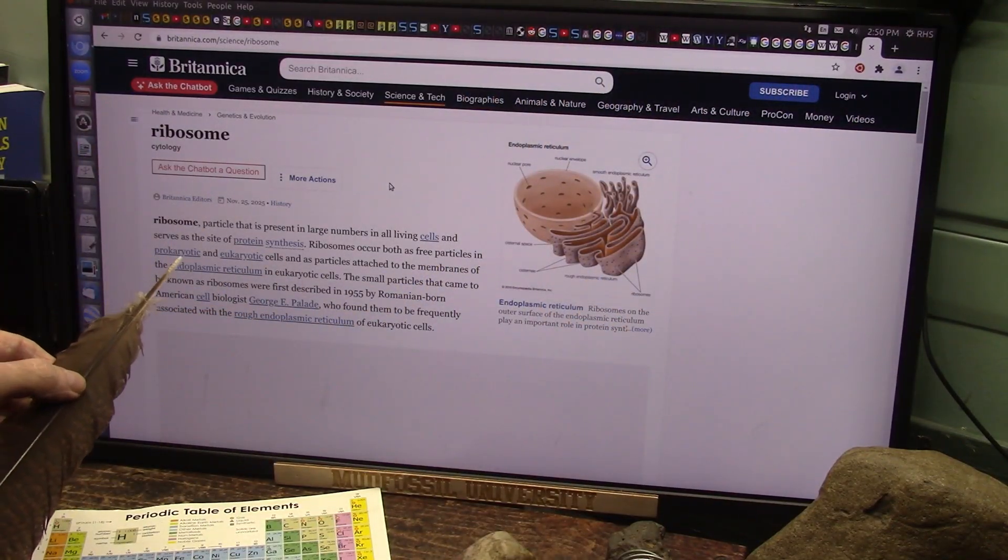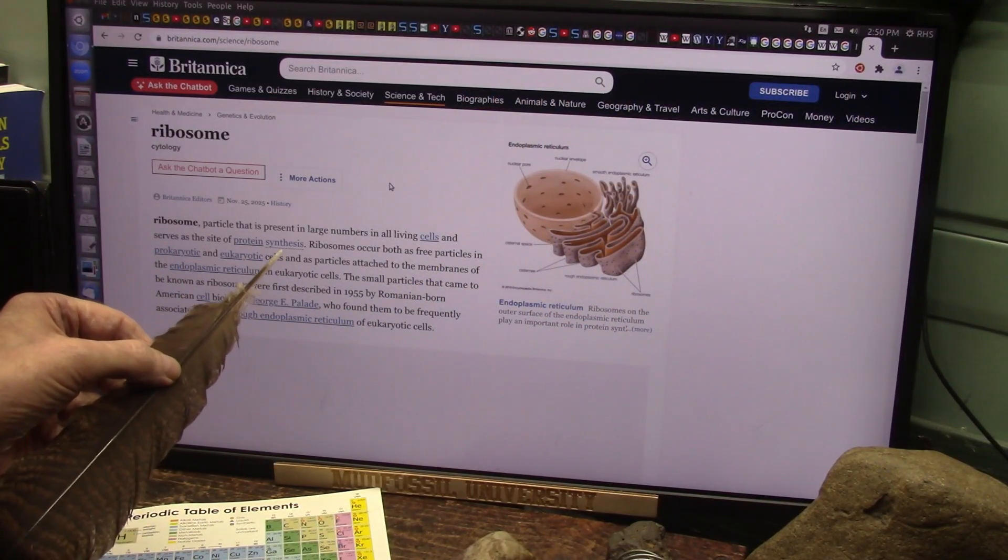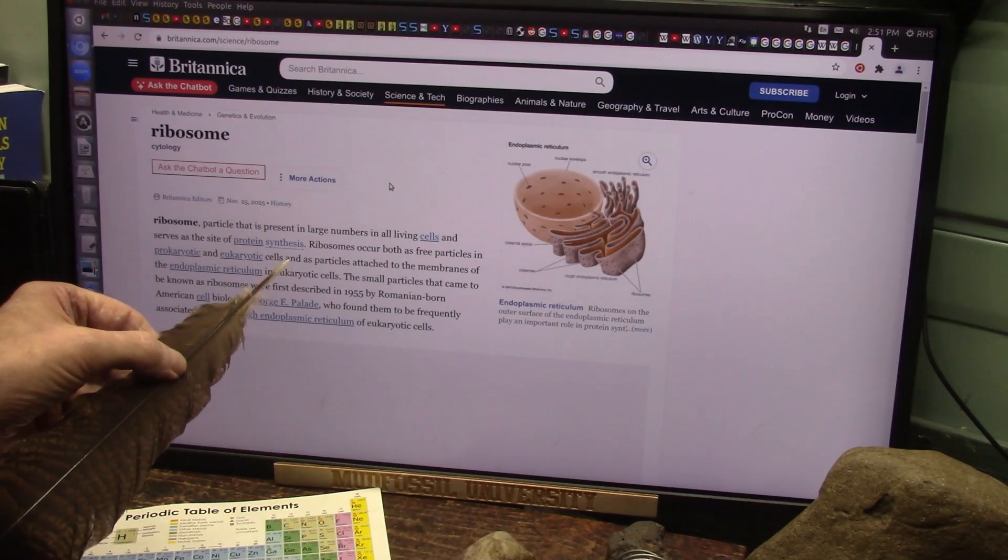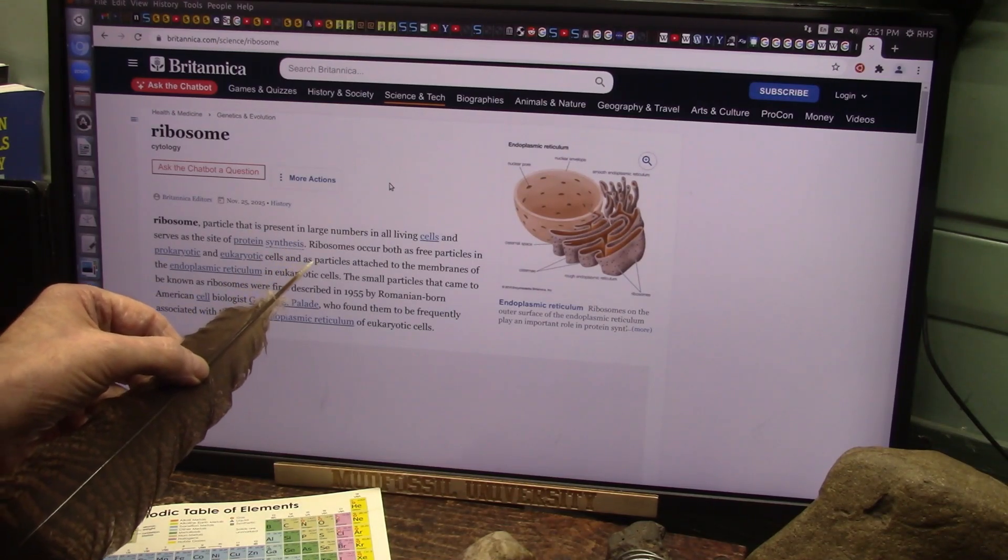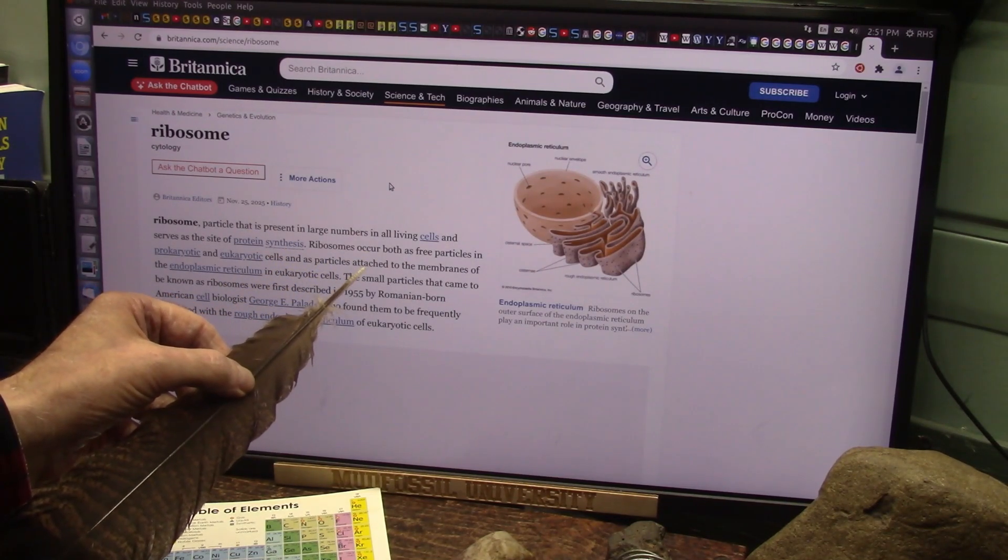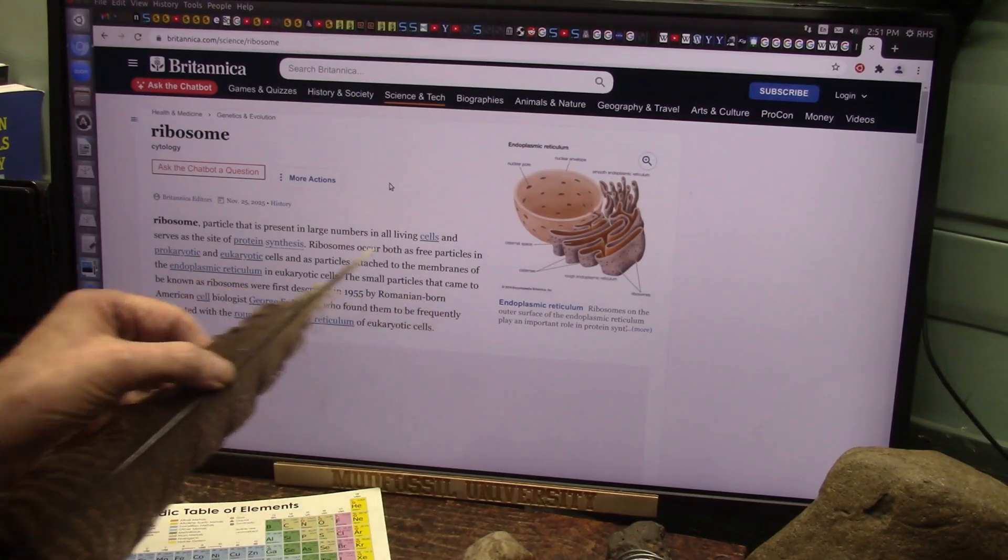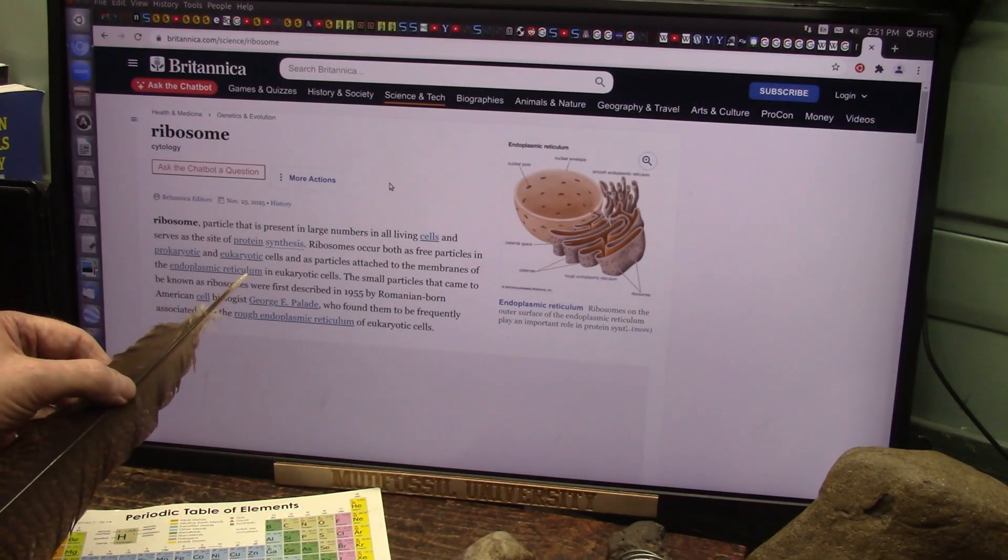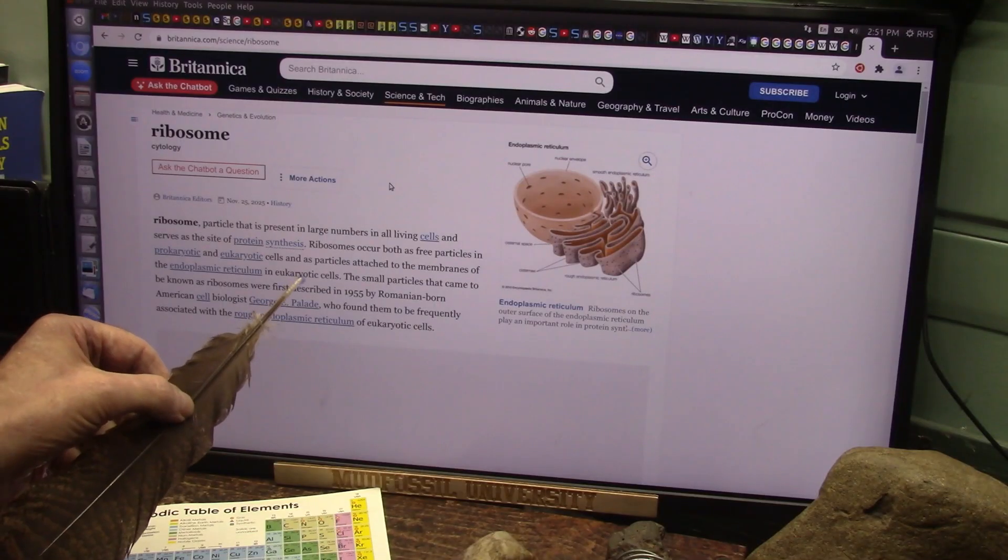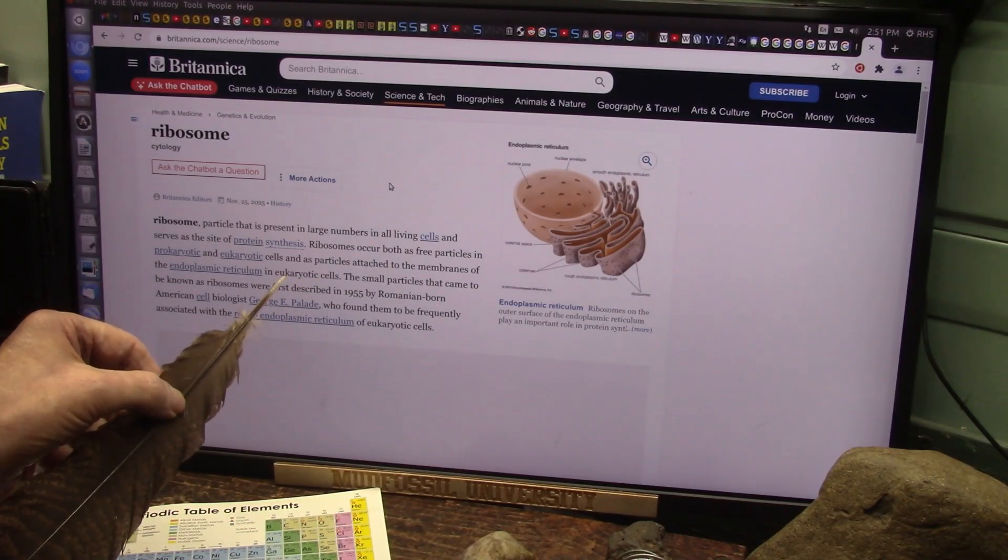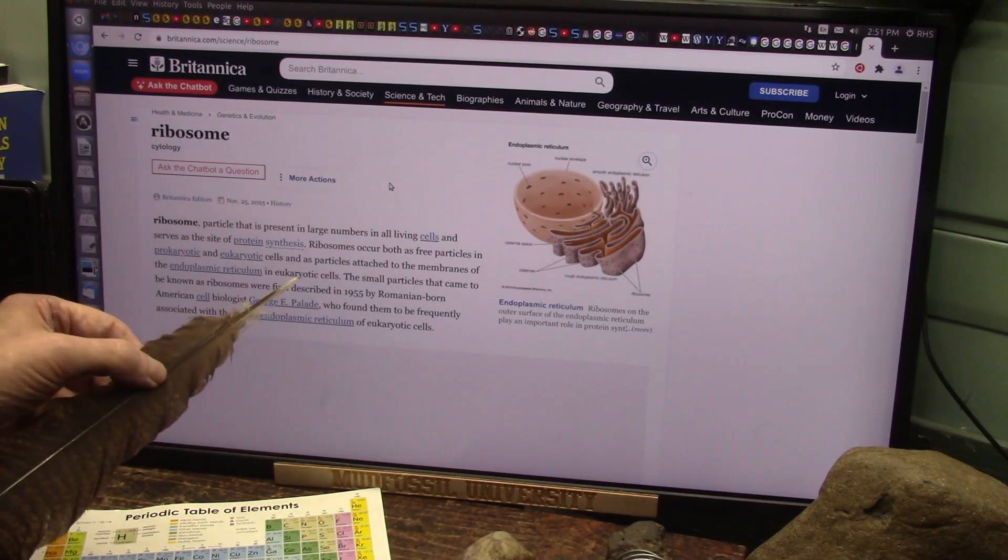Ribosomes occur both as free particles floating all around in your body, just everywhere, in prokaryote and eukaryote cells, animals, plants, all of them. And they also exist as particles attached to the membranes of the endoplasmic reticulum in human cells, in eukaryotic cells which are animal cells.